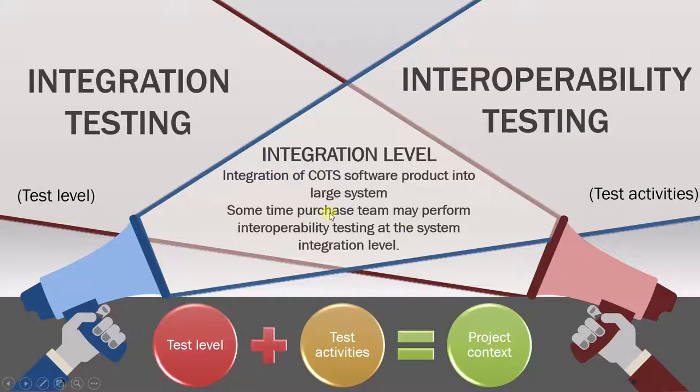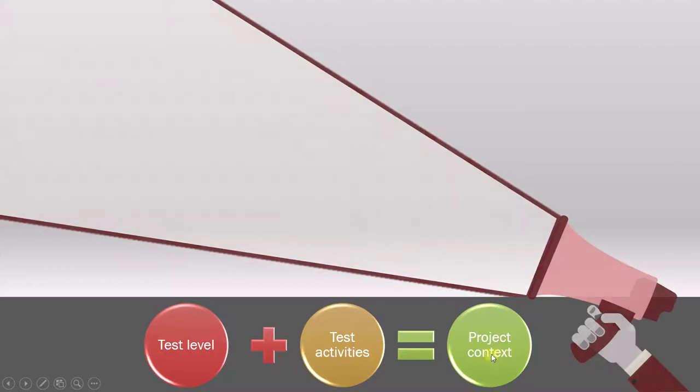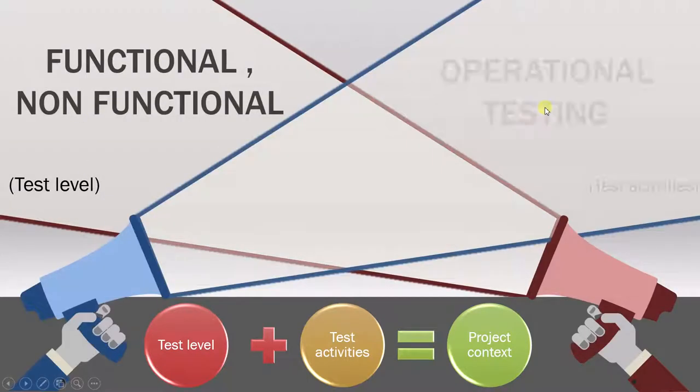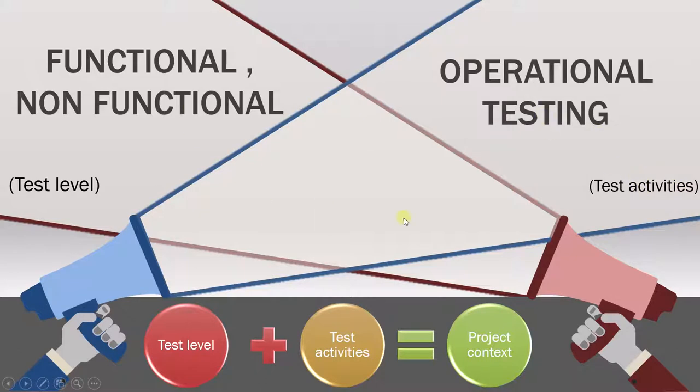Let's now move to the second example. Here again, we combine test levels and test activities to achieve project context. Suppose you have a functional, non-functional testing level and operational testing activity. We combine the two for a project context. Here's what that context looks like.